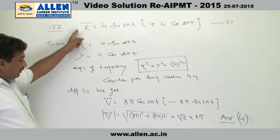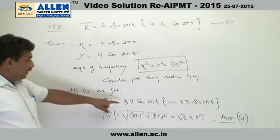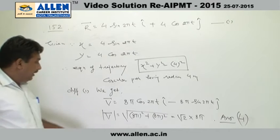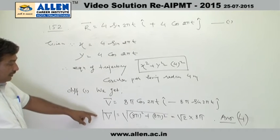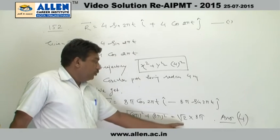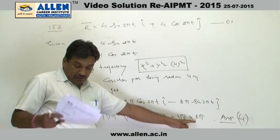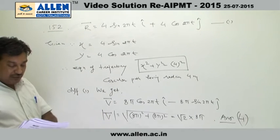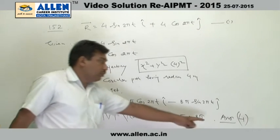And differentiating equation number 1, we get the velocity vector equal to 8π cos 2πt i cap minus 8π sin 2πt j cap. After taking the magnitude, we observe that the velocity is √2 into 8π, and in the fourth option, the velocity is given 8 meter per second. So obviously, option 4 is the correct answer because that is wrong.